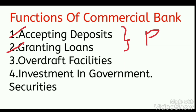The third function is overdraft facility. The bank provides overdraft facility on our current account. For example, if our deposits are rupees 1000 but I want to withdraw rupees 2000, the bank will give me 1000 rupees extra as overdraft — it can be treated as a short-term loan. The fourth function is investment in government securities, done by the bank on our behalf.